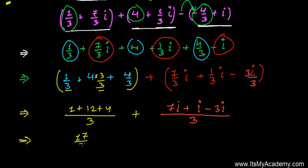In our next step, 1 + 12 + 4 equals 17 over 3. That's the real part. Plus 7i + i equals 8i, minus 3i gives 5i over 3.